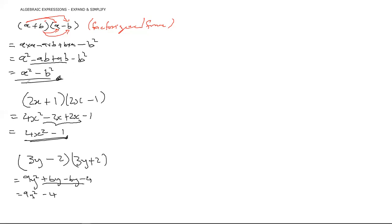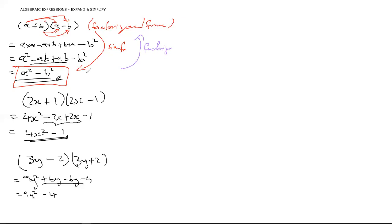What's going on is something we call the Difference of Perfect Squares — or more commonly, Difference of Two Squares, which I'll abbreviate as DOTS. Coming this way — from factorized to expanded — we are simplifying. Going the other way, we are factorizing. These are opposite operations.